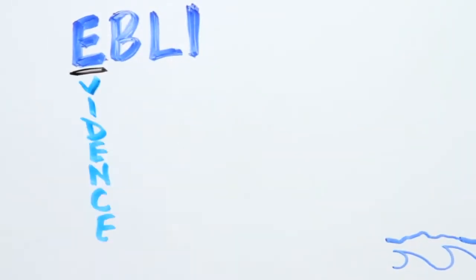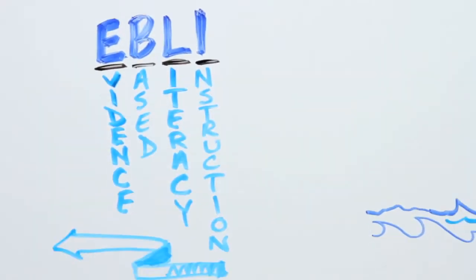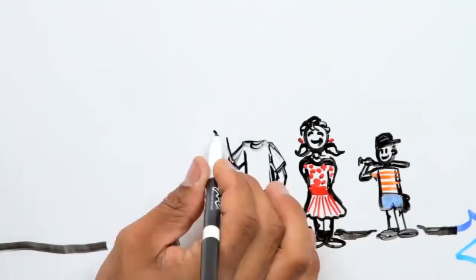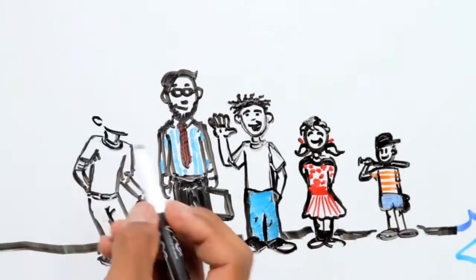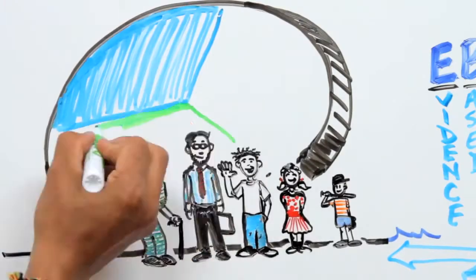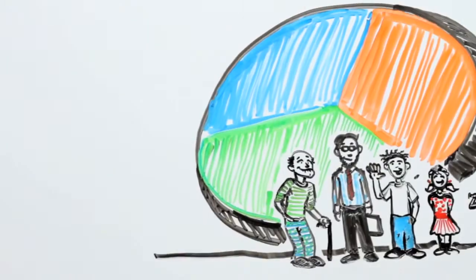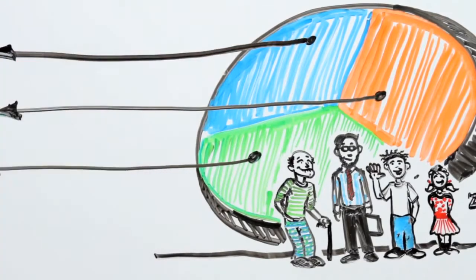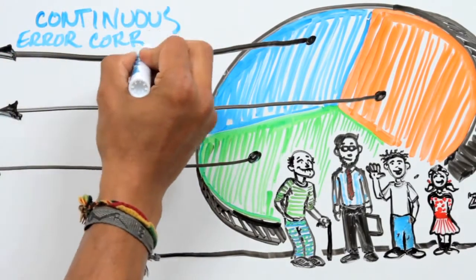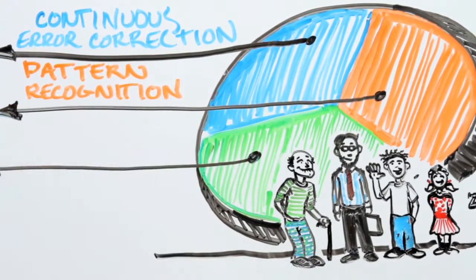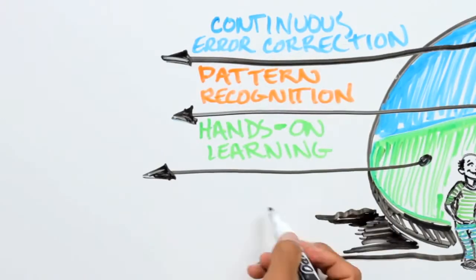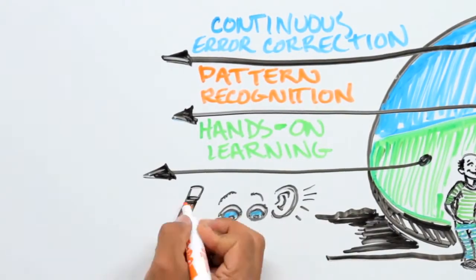Eblee, which stands for Evidence-Based Literacy Instruction, is a system that teaches learners of any age and skill level to reach their highest potential in reading, writing, and spelling. It contains a set of strategies that includes continuous error correction, pattern recognition, and hands-on learning, where students listen, read, and write during instruction.